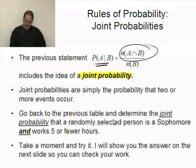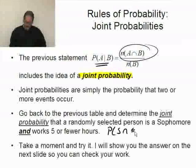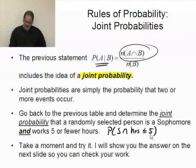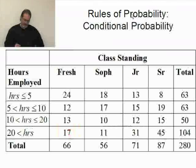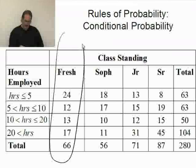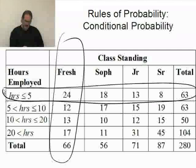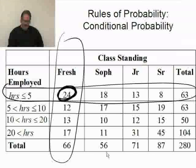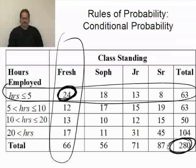I'll go back to the previous table and I'll determine the probability that a randomly selected person is a sophomore and works five or fewer hours. So this would be the probability of a sophomore and hours was less than or equal to five. If I go back to the table, here's my sophomore, and here's my less than or equal to five hours. Those are the two events. What's the probability that they both occur? Right there, there's 24 out of 280. So there's 24 ways that can happen out of the total.